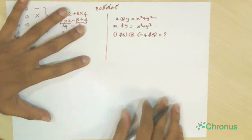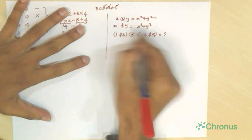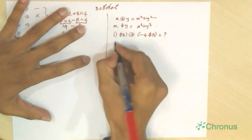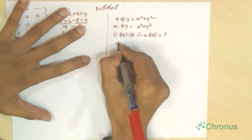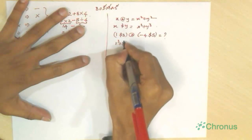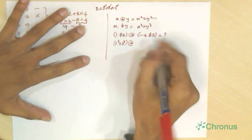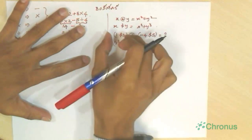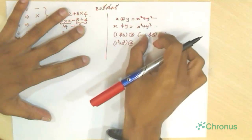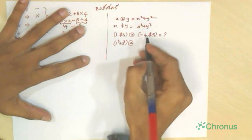So we just use this formula. x dollar y is x cube plus y cube. So 1 dollar 3 is 1 cube plus 3 cube. The whole idea is to solve by parts. So we solve each of the brackets, and then go with the brackets.